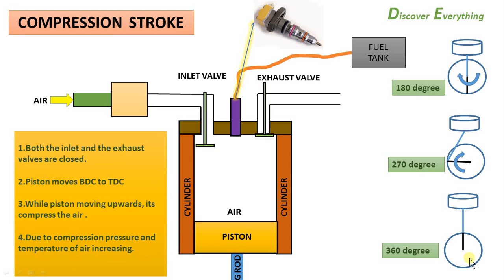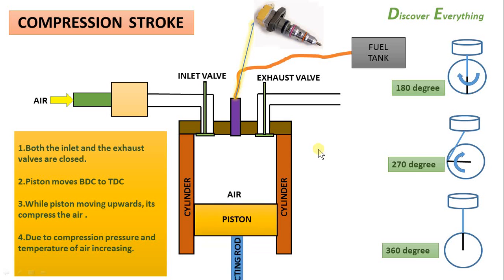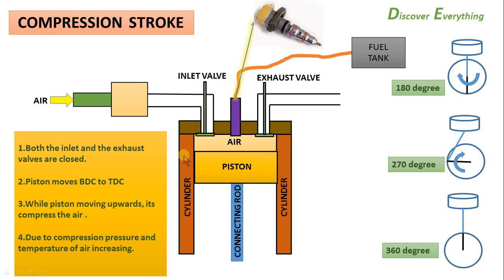Next is the compression stroke. In the compression stroke, the inlet valve is closed. The piston moves from bottom dead center to top dead center. The air inside the cylinder is compressed. The crank rotates another 180 degrees, making the total crankshaft rotation 360 degrees — one full rotation — to complete the compression stroke.